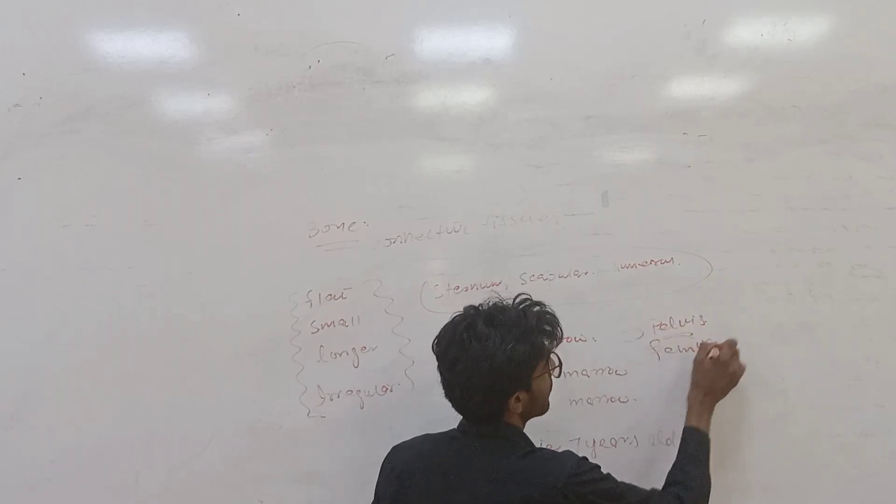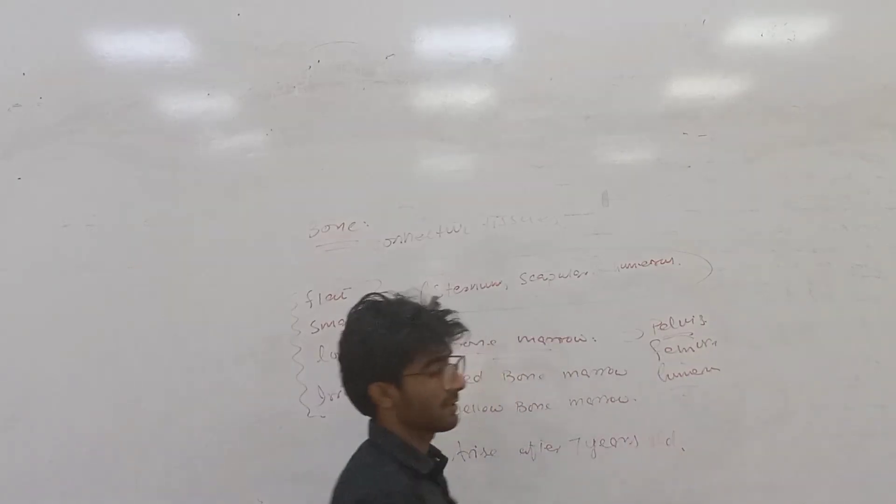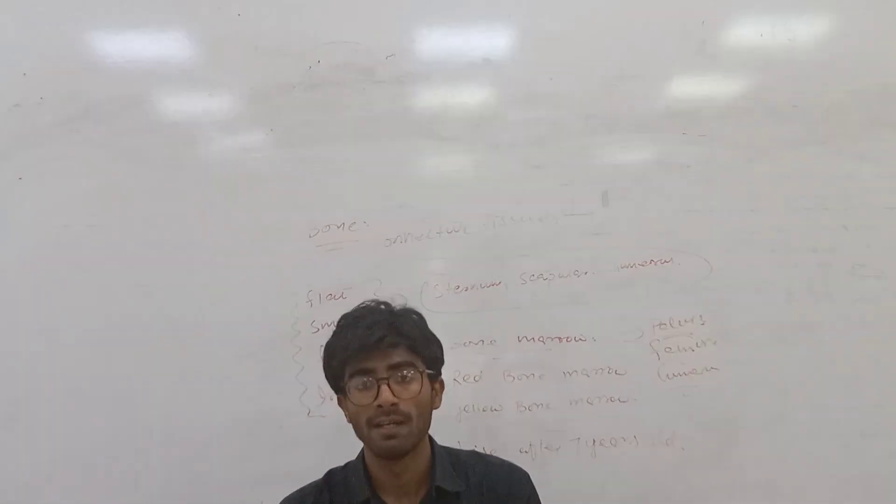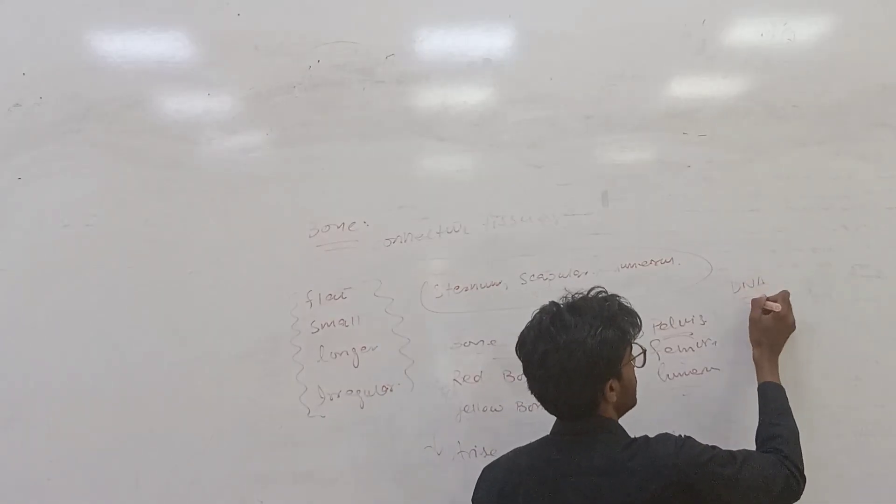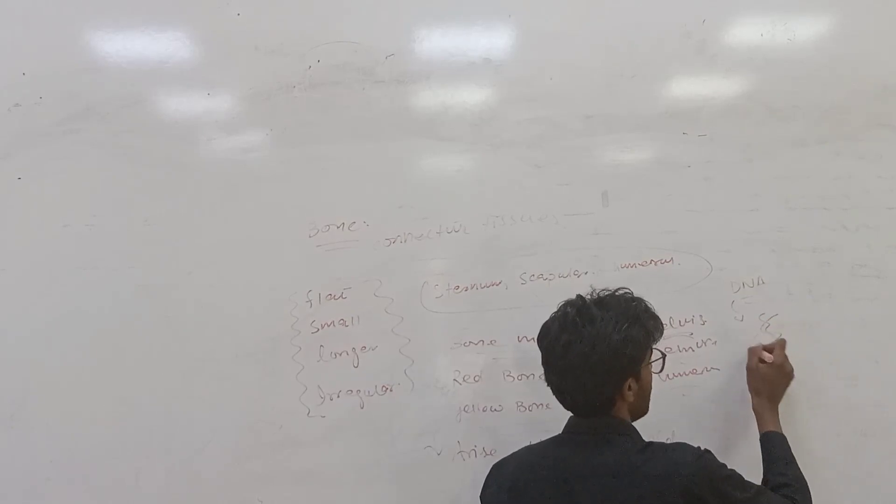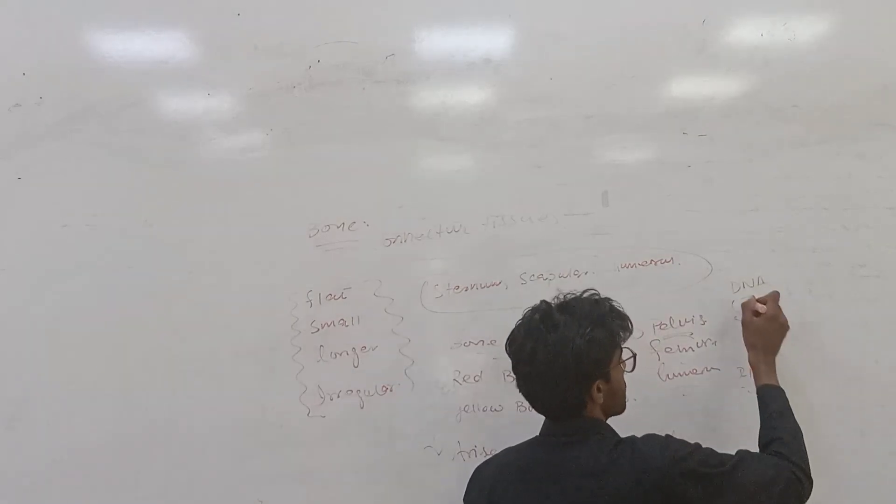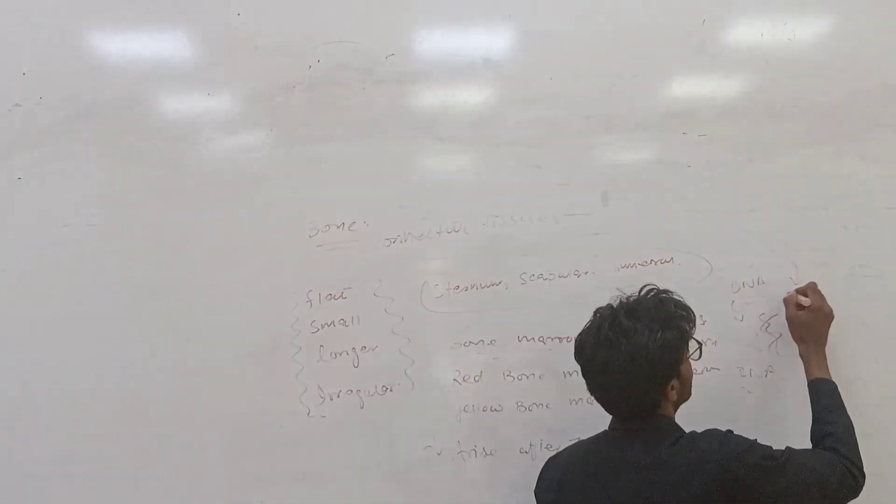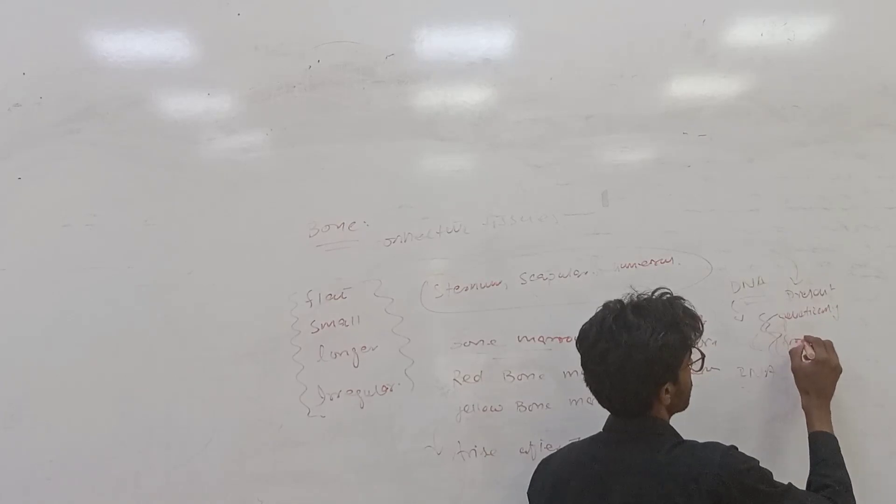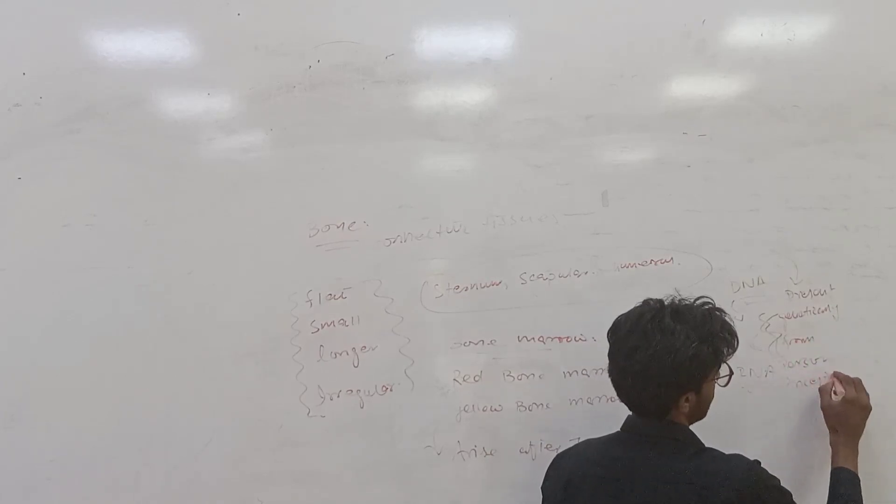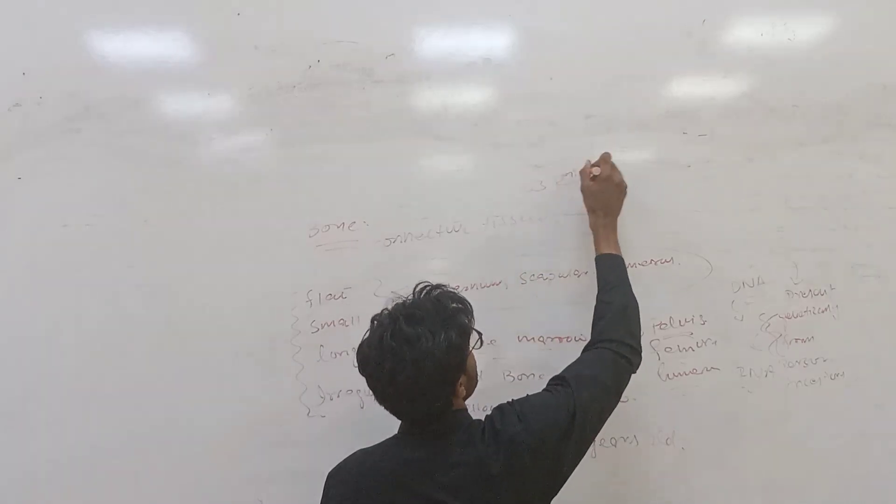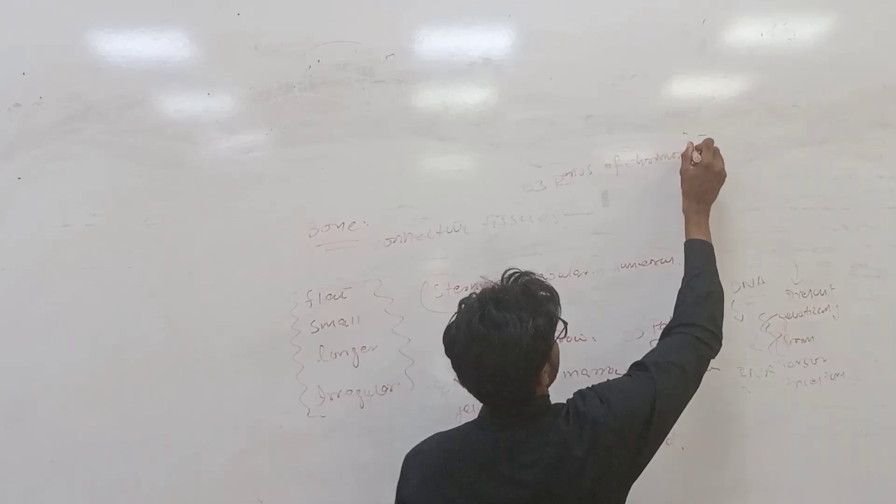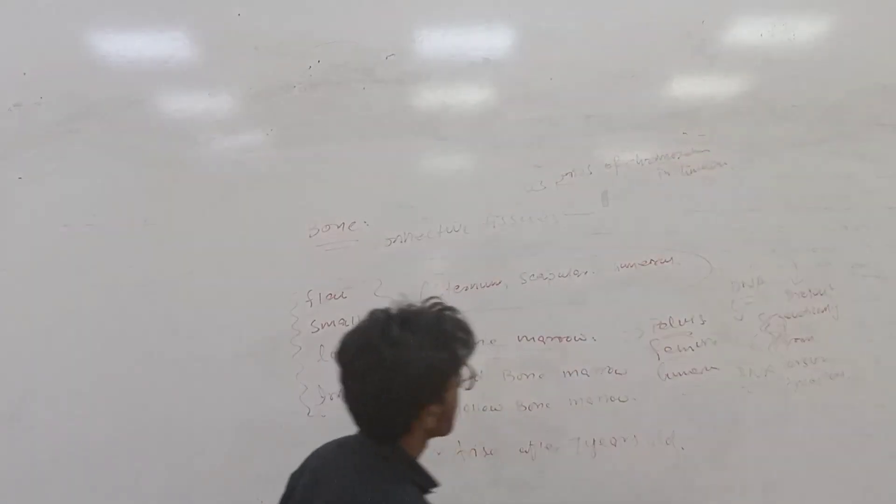We take bone marrow for investigation. Bone marrow has genetic information. For example, they have chromosomes, they have DNA which is double helical structure. DNA contains genetic information from the person. We know that there are 23 pairs of chromosomes in humans.